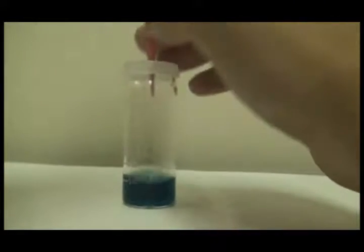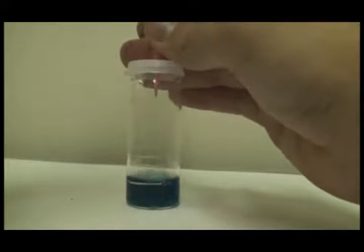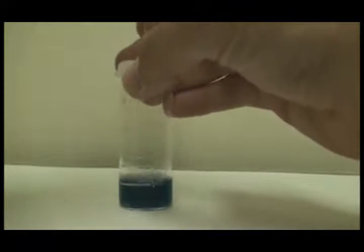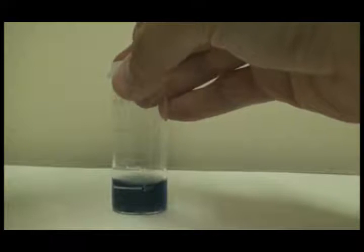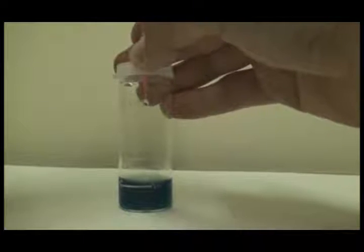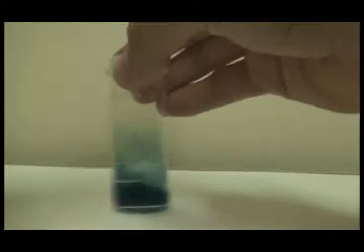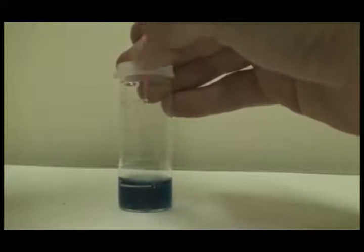Using the syringe we loaded to the zero mark with alkalinity titration reagent B, we add one drop and then gently swirl the solution. We repeat the procedure one drop at a time until the solution changes from blue to pink and record the level indicated on the titration syringe.